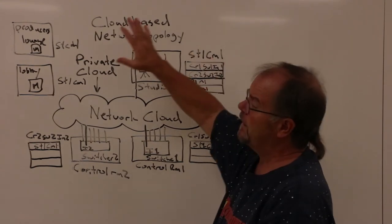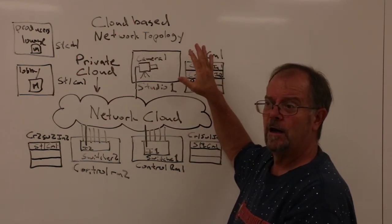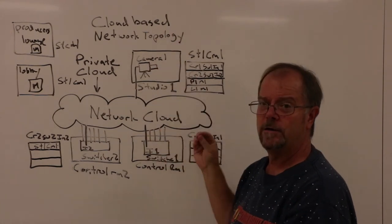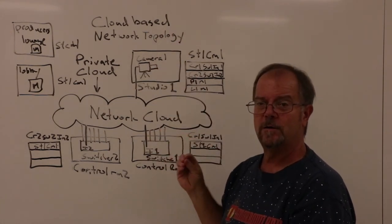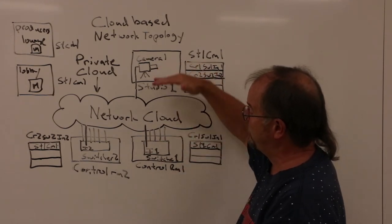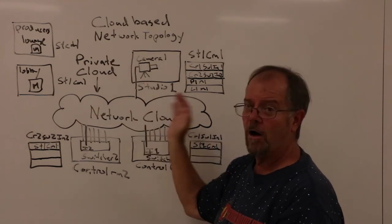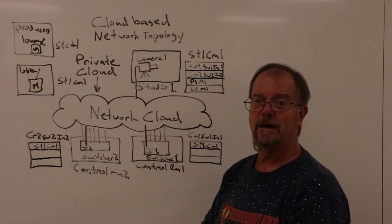So cloud-based network topology as the backbone for a production studio allows for a huge degree of freedom in terms of how the studio as a whole is configured—not just simply a studio and a control room, but all the studios, all the control rooms, all the various monitors in the facility.